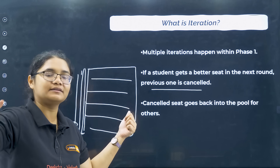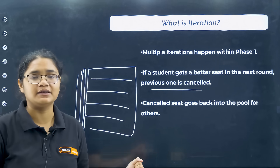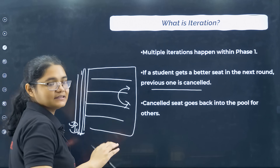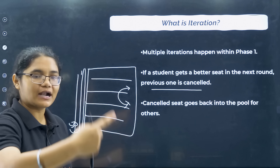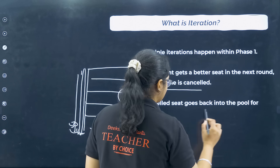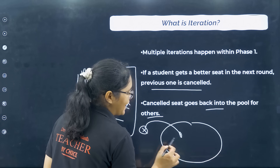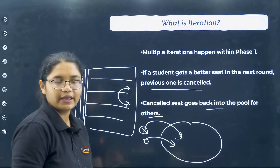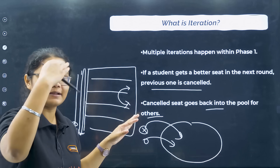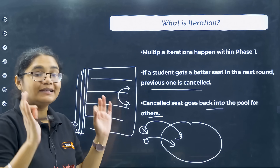In subsequent iterations, suppose some students have cancelled seats, or some seat matrices have increased — you may get a better option, and the first allotted seat is rejected. Cancelled seats go back to the pool for others. The computer checks all your options many times until you get the best seat according to your rank.